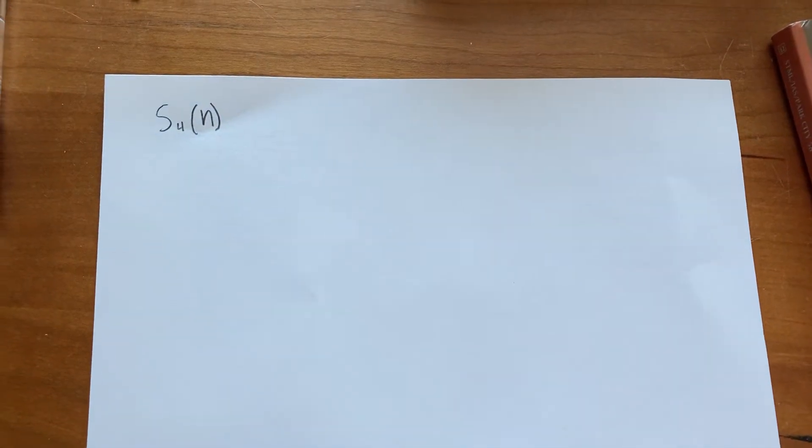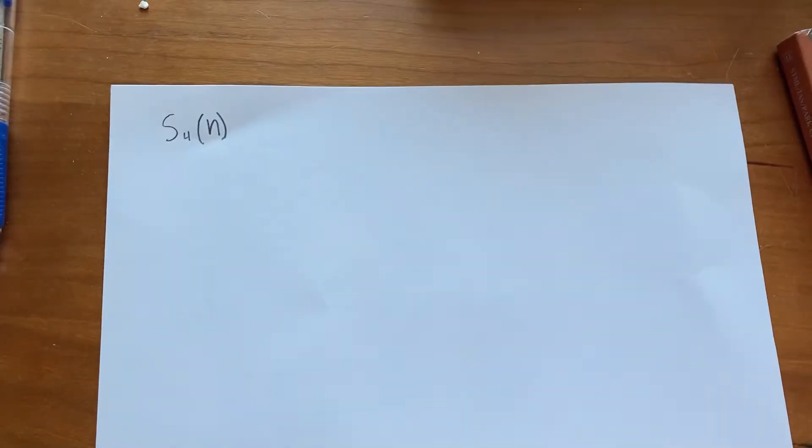Hi guys, in today's video I'm going to be showing you a very cool formula for the number of ways to represent a natural number as a sum of four squares of integers.